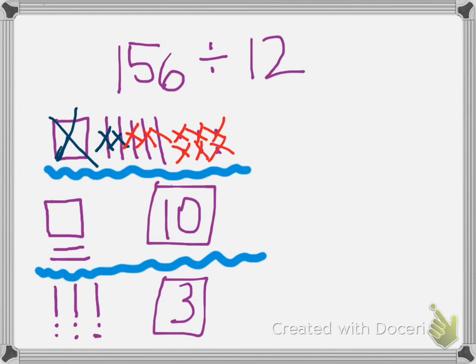And in order to find the total number of groups of twelve that I made, I'm just going to add these two numbers up. We actually call these the partial quotients, so I'm going to add up the partial quotient ten to the partial quotient three, and that's going to give me thirteen.